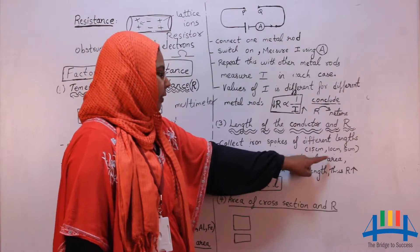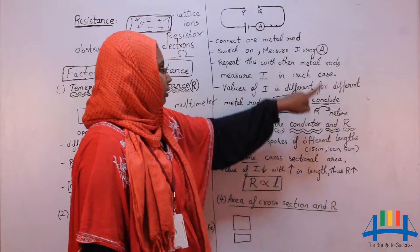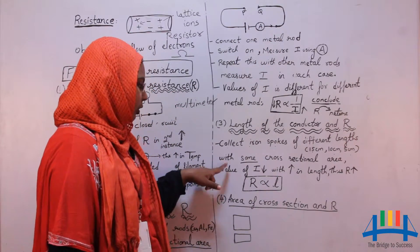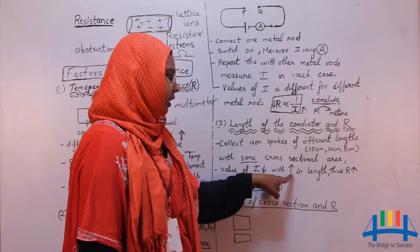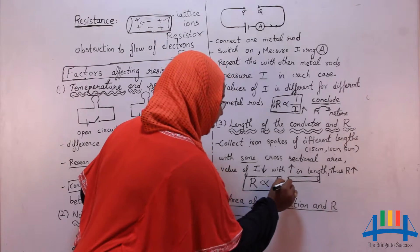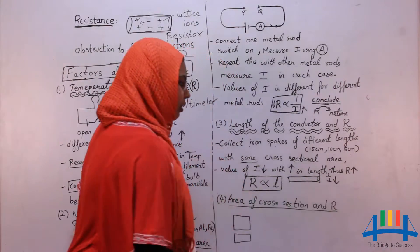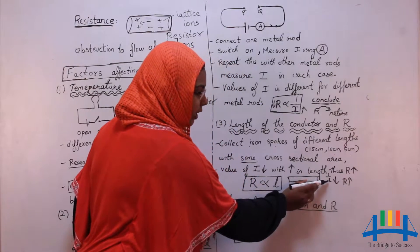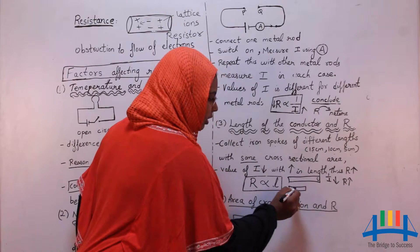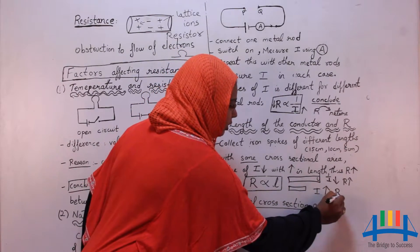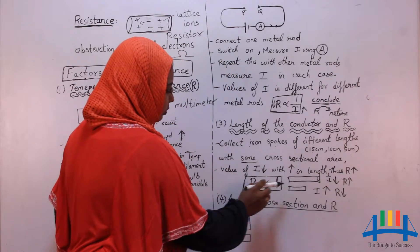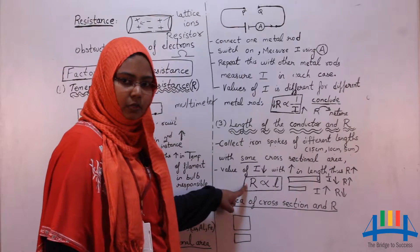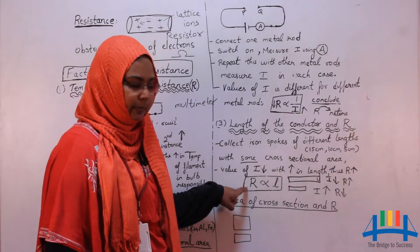Repeat this with different iron spokes — 10 cm and 5 cm. Switch on the circuit and measure the value of current, noting down the corresponding values. What you will notice is the value of current decreases with increase in length. If length is more, current flow will be less — meaning resistance offered is more. If length is less, current flow will be more and resistance offered is less. So we can conclude that resistance is directly proportional to length.